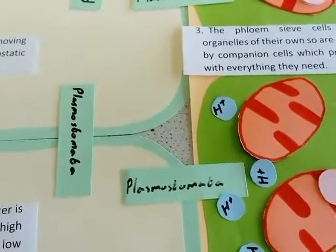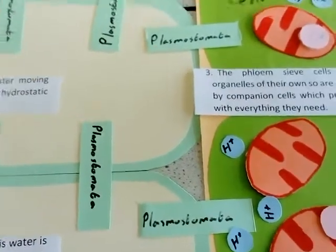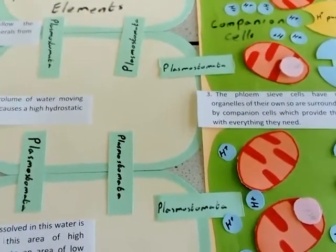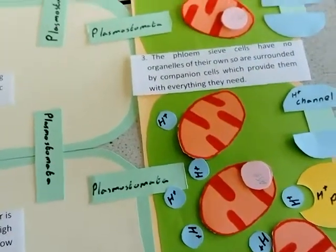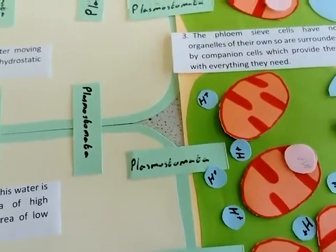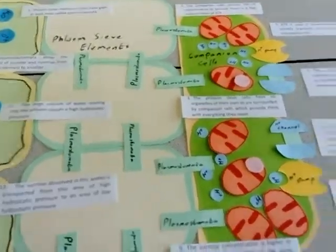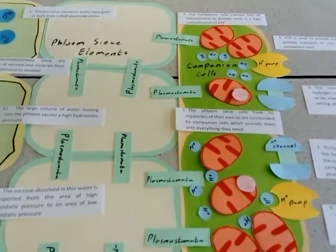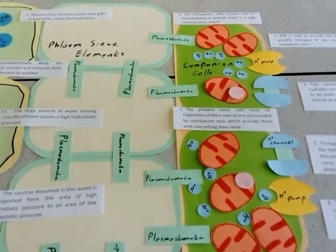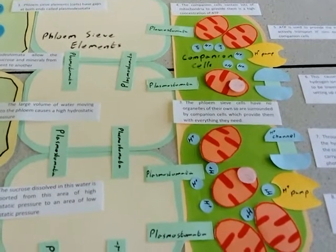The problem is though, phloem sieve elements are basically hollow cells. They don't have any organelles of their own. So they need companion cells which provide everything they need. The companion cells contain lots of mitochondria because they require lots of ATP to be formed because they're going to carry out lots of active transport.